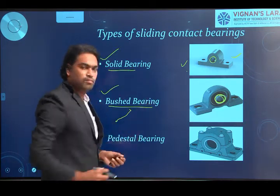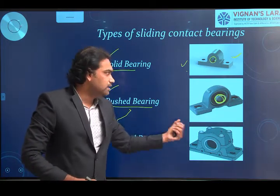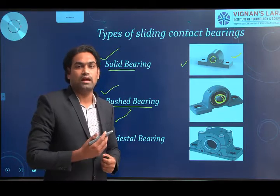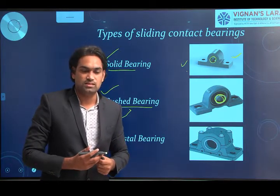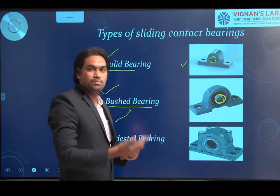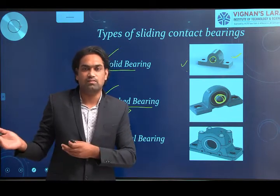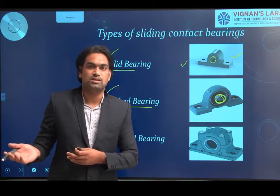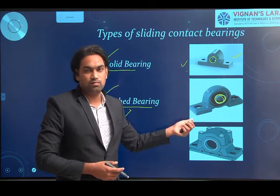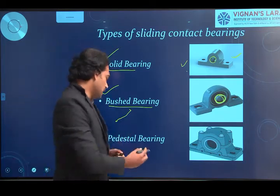In both solid and bushed bearings, one difficulty is that the shaft has to be inserted through the ends — the shaft must have a free end to assemble the bearing. For larger shafts or if you want to replace the bearing liner, you need to free one end of the shaft. When one end is connected to a power source and the other end also has an assembly, freeing an end creates complexity. This gives rise to another type: the pedestal bearing.